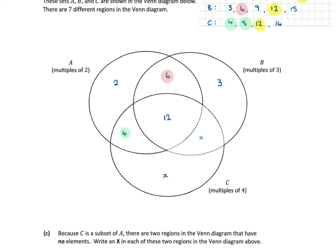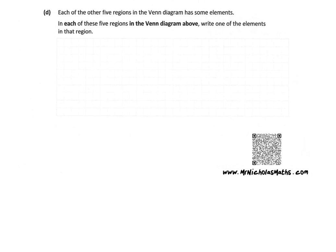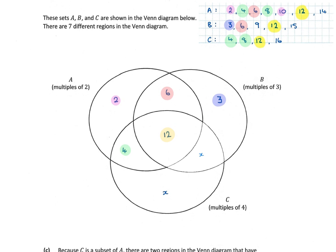For the outer regions, we can fill in the number 2 in the A-only region, and 10 could also go there. For the B-only region, the numbers 3 and 9 fall into that bracket. Our 12 is already in the centre. The question asks for one element in each of the other five regions of the Venn diagram, and we can see that we have one element in each of those regions as required.